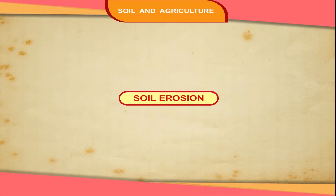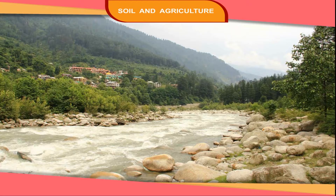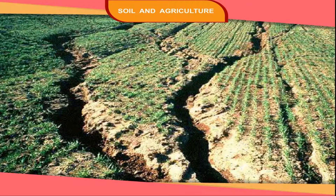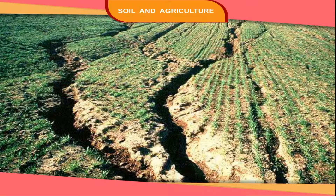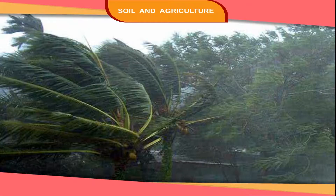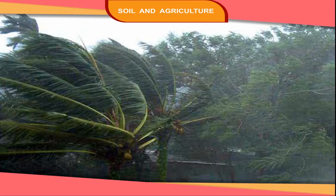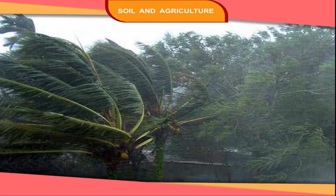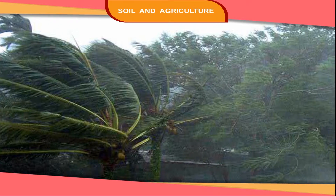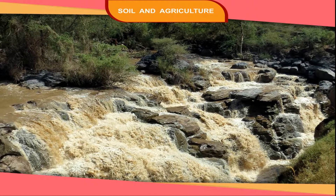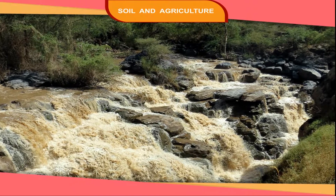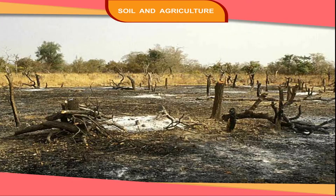Sometimes rain, rivers and winds carry away the top layer of soil. This is called soil erosion. Strong winds blow away the topsoil of dry areas with little vegetation to a great distance. The topsoil of hilly areas flows away with rainwater. Cutting down of trees and overgrazing on farmlands also cause soil erosion.